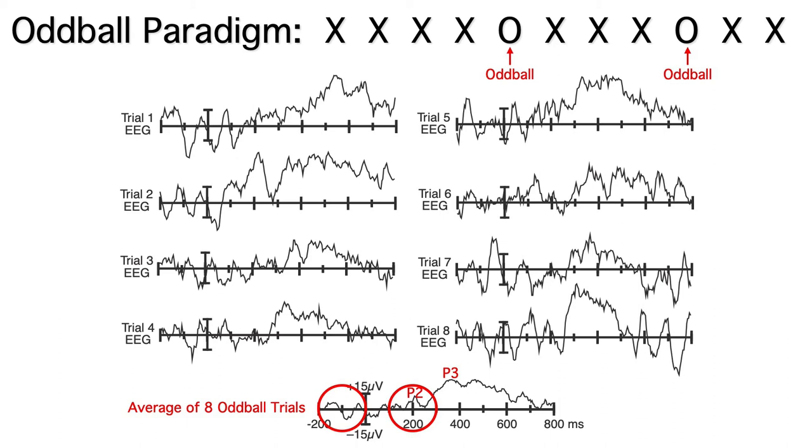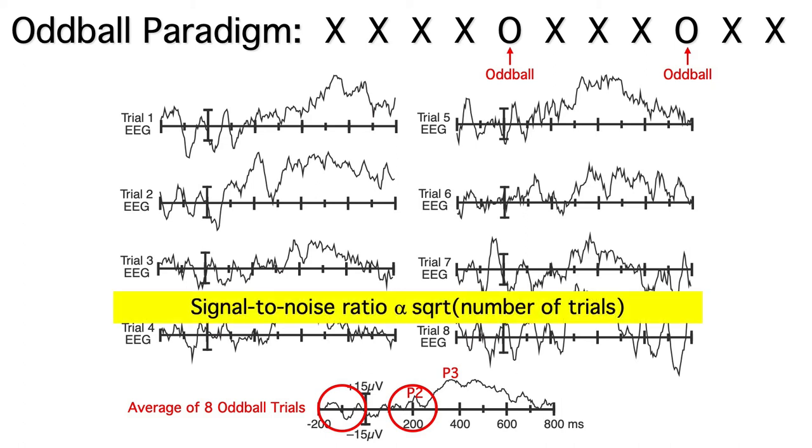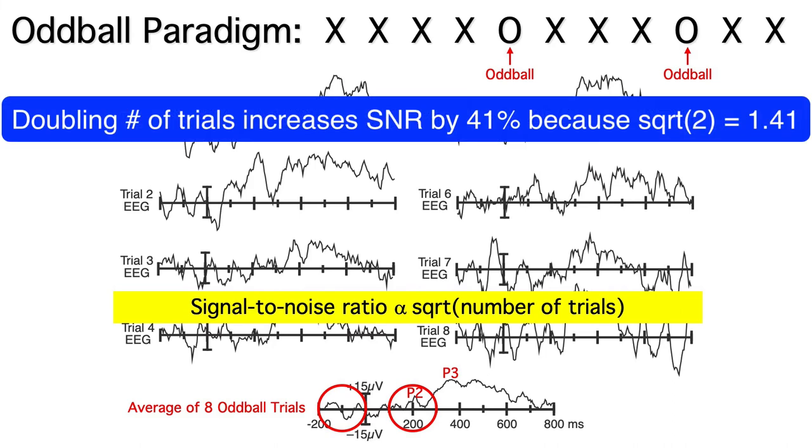Now, if we make some simple assumptions, it turns out that the signal-to-noise ratio will increase in proportion to the square root of the number of trials.